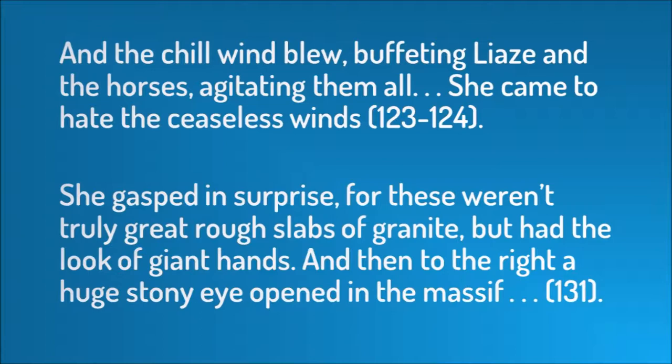Eventually, Laez reaches the mountain peaks, but they're not what they seem. McKiernan says: '...she gasped in surprise, for these weren't truly great rough slabs of granite, but had the look of giant hands, and then to the right a huge stony eye opened in the massive.' In this moment, the setting becomes both a character and an obstacle. It is a physical character that's moving and interacting with Laez, and it's also an obstacle because it's preventing her from continuing on. These are two examples of how you can use setting as obstacle and as character.